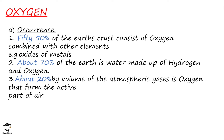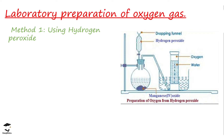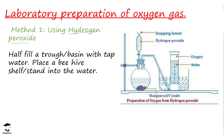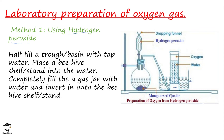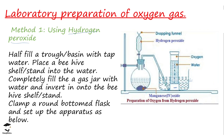One method of preparing oxygen in the lab is by using hydrogen peroxide. In the setup, we have a half-filled trough or basin with a beehive shelf at the bottom, where we place an inverted measuring cylinder. The basin is filled with water and connected to a round-bottomed flask containing manganese(IV) oxide. The dropping funnel holds liquid hydrogen peroxide, and when the tap is opened, hydrogen peroxide trickles down into the flask where the manganese(IV) oxide is present, and the reaction starts.